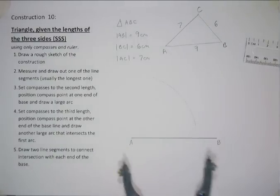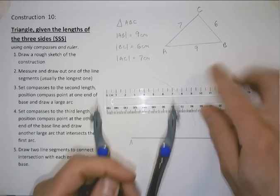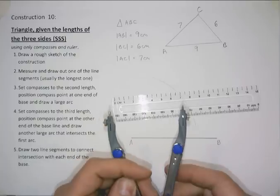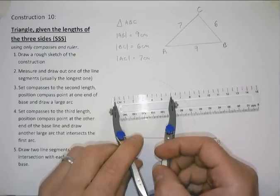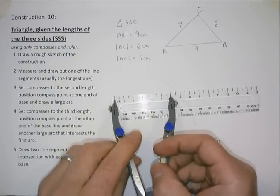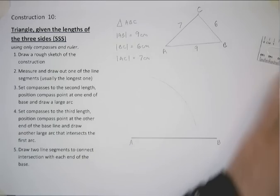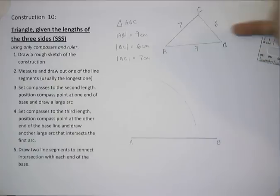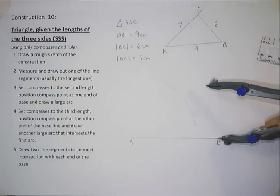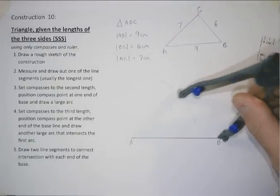We then take the ruler again and this time do the third measurement which is 6. So, we set it to 6 and this time we're starting obviously from B since B is the point that the 6 is coming out of and draw a second arc.